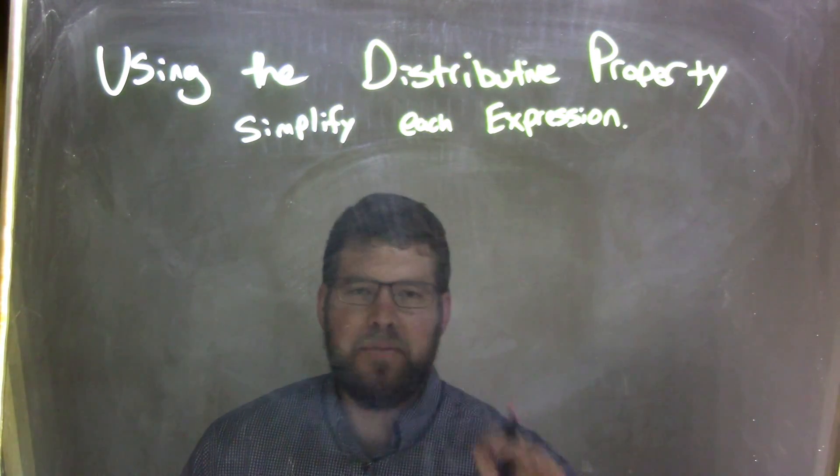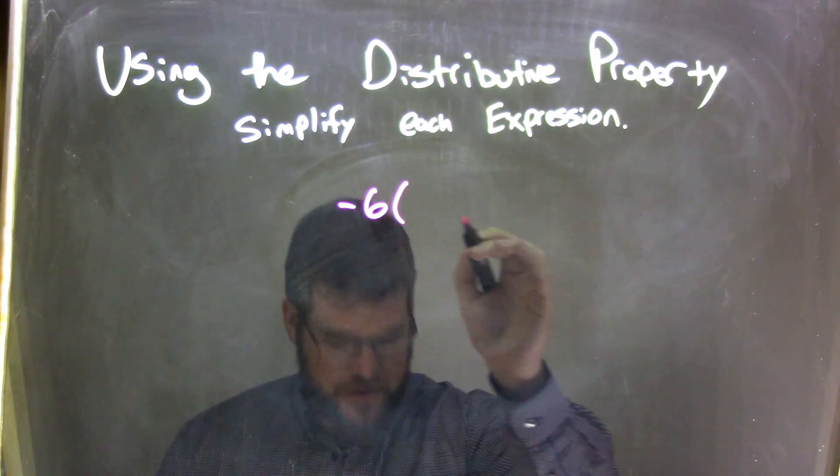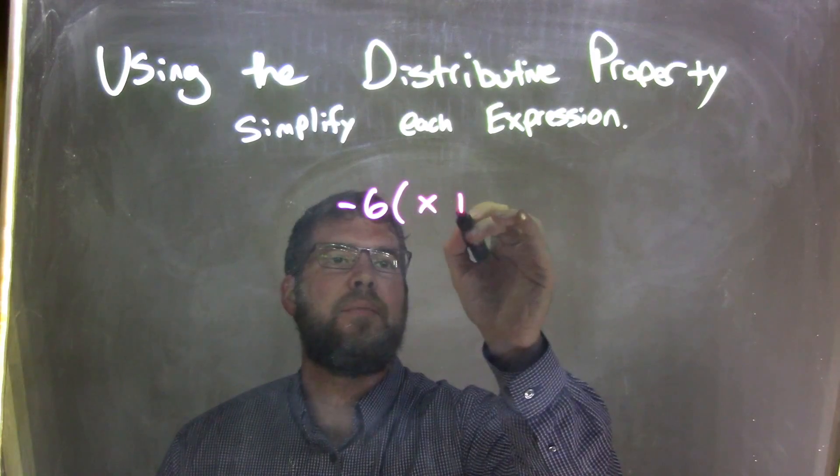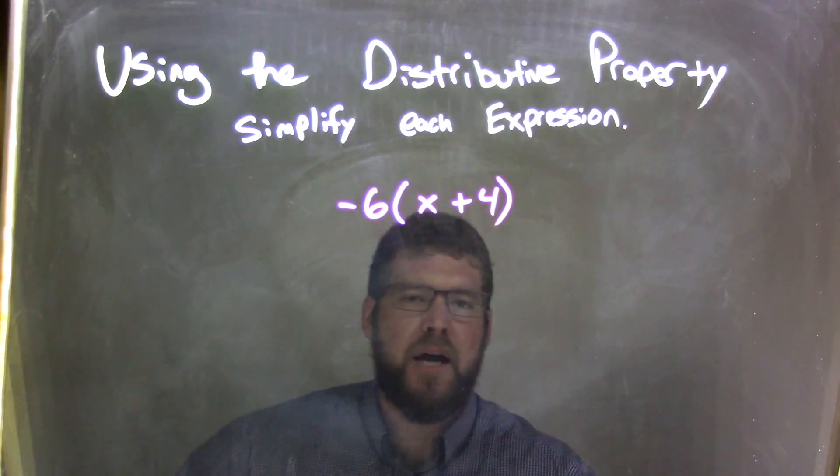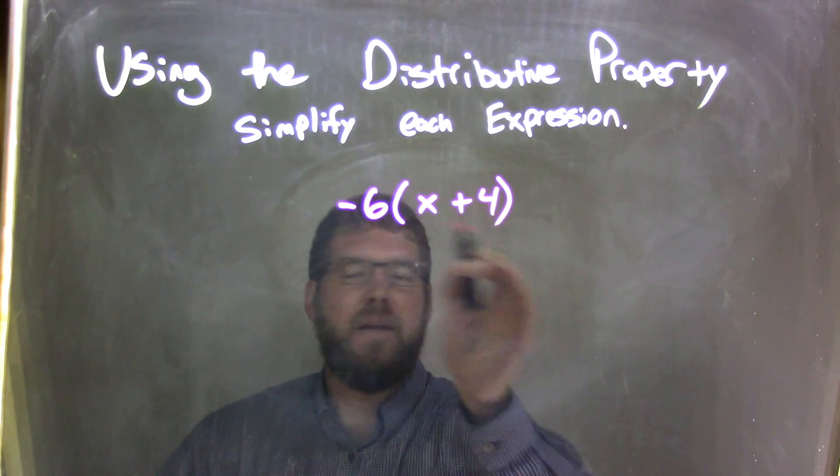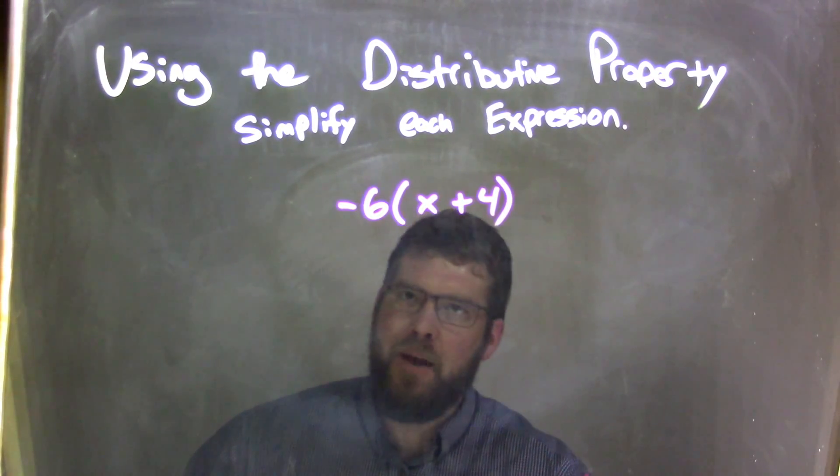So, if I was given this expression, negative 6 times x plus 4. Well, x plus 4 is inside the parentheses. They're not like terms, so we can't combine them. Normally, parentheses comes first, can't combine them. Let's check that off.